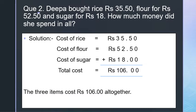Starting from the right: 0 plus 0 plus 0 is 0. 5 plus 5 is 10, write 0 carry 1. 5 plus 2 is 7, plus carry 1 is 8. 7 plus 8 is 15, plus carry 1 is 16, write 6 carry 1. 3 plus 5 is 8, 8 plus 1 is 9, plus carry 1 is 10. So the total cost is Rs. 106. The 3 items cost Rs. 106 altogether.